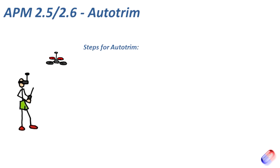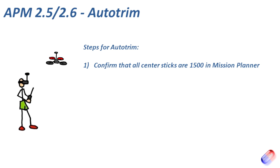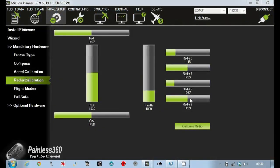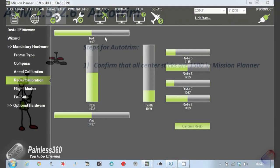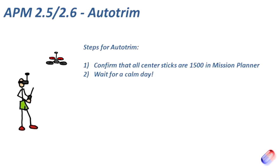First of all you need to confirm that all the sticks on the transmitter are being read by the APM as 1500, which is the middle value. Jump into Mission Planner, go into the RC control section, and adjust the sub trims on each control on your transmitter until they read as close to 1500 for rudder, elevator, and aileron as you can get them. Once you've done that, the next thing is to wait for a calm day — it has to be perfectly still, as any wind or breeze that pushes the craft around will mess this up. First thing in the morning is best, or an enclosed space like a barn or sports hall is perfect.